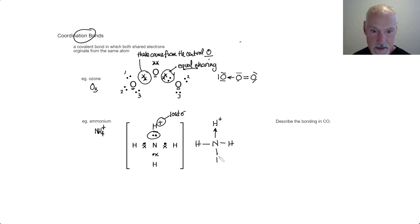And I can show it this way. And to draw this correctly, I should put square brackets around it to indicate that it's an ion.